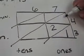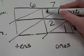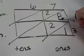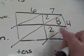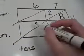7 times 4 is 28, putting my 2 on top and my 8 on the bottom. Next, I'm going to pull down my 6 and pull over my 3. 6 times 3 is 18.